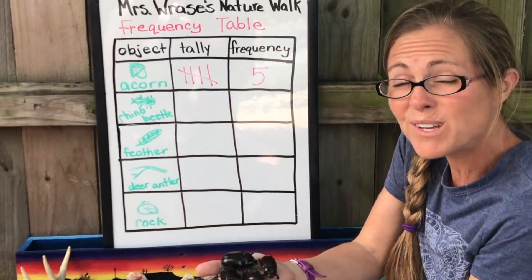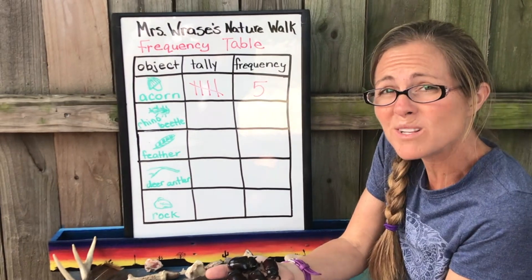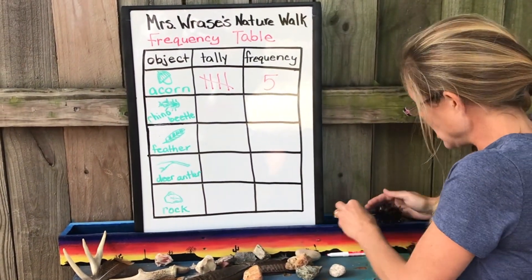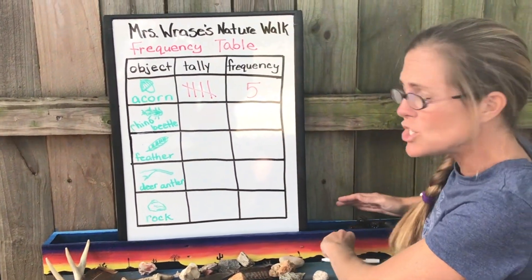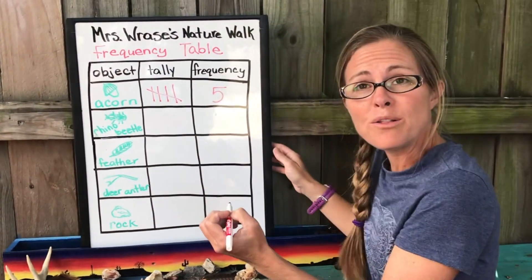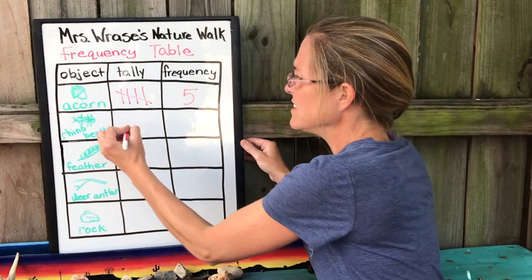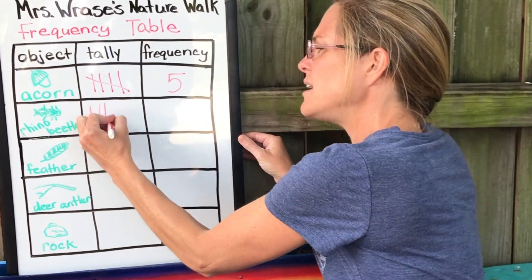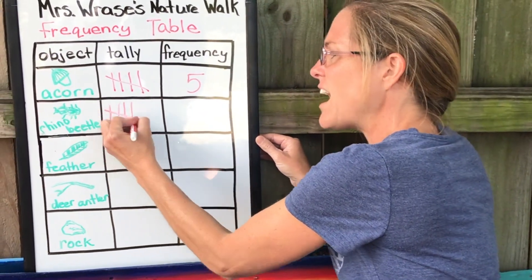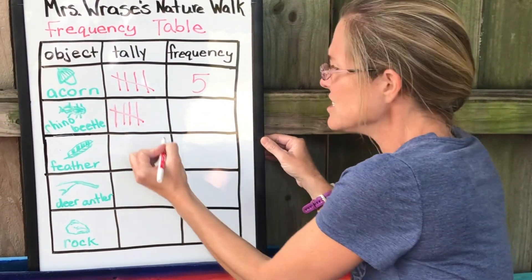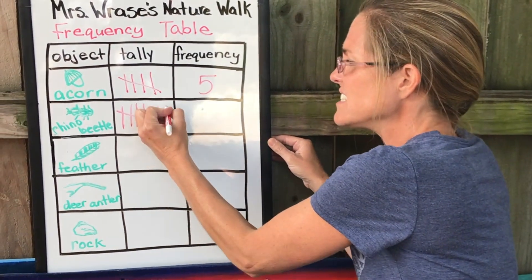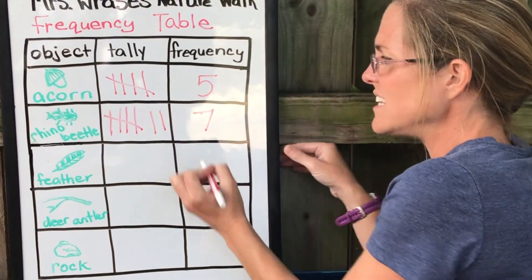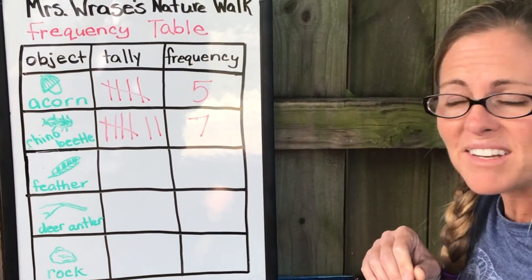Let's take a look next at our rhino beetles. We have seven rhino beetles in all, so we'll go to our chart to show the number seven. One, two, three, four — five is our slash — six, seven, and our frequency is seven.